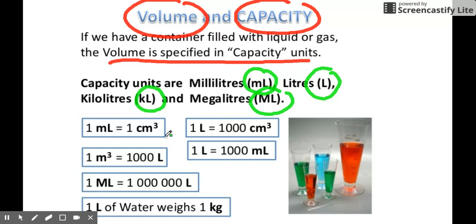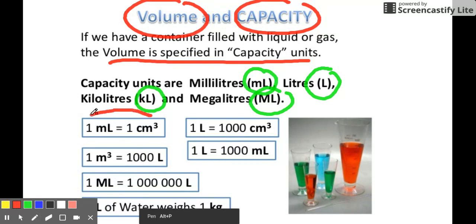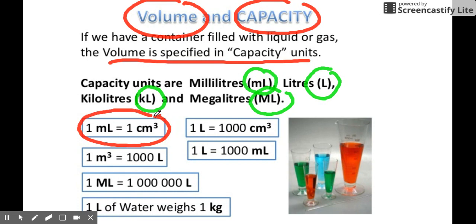Now down here you'll see the basic conversion factors of volume. Take note: 1 milliliter is always equivalent to 1 cubic centimeter. It's one-to-one, therefore you can have the same value but interchange mL and cm³. For liter, cm³, and mL, they have the same conversion factor because in 1 liter there are 1000 milliliters, therefore 1 liter also has 1000 cubic centimeters.